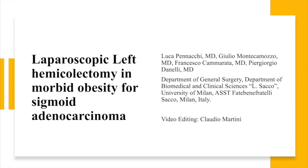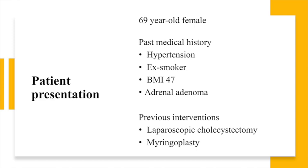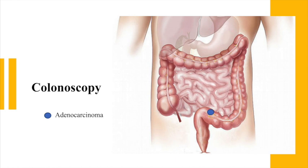A 69-year-old morbidly obese woman started complaining about bowel function alteration with prevalent constipation and episodes of rectal bleeding. A colonoscopy was performed and it showed an ulcerated lesion about 25 cm from the anal margin, which was an adenocarcinoma.